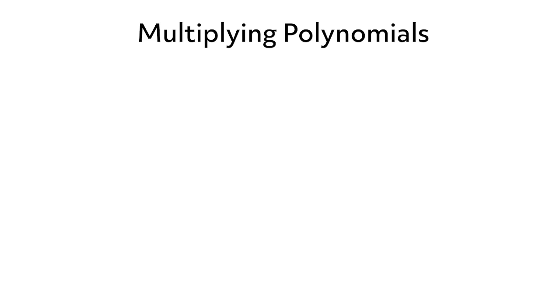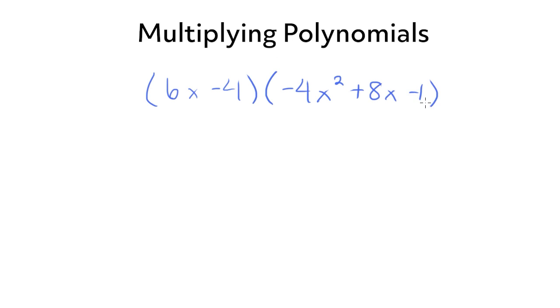Using the box method is just a tool for multiplying polynomials in a systematic way. Remember, you need to multiply each part of the first polynomial by each part of the second polynomial, which is what we did with our boxes. Now let's work through an example where we do the same thing but without the box method. So we're going to multiply 6x minus 4 by negative 4x squared plus 8x minus 1. Remember, you have to multiply each part of the first binomial by each part of the trinomial.